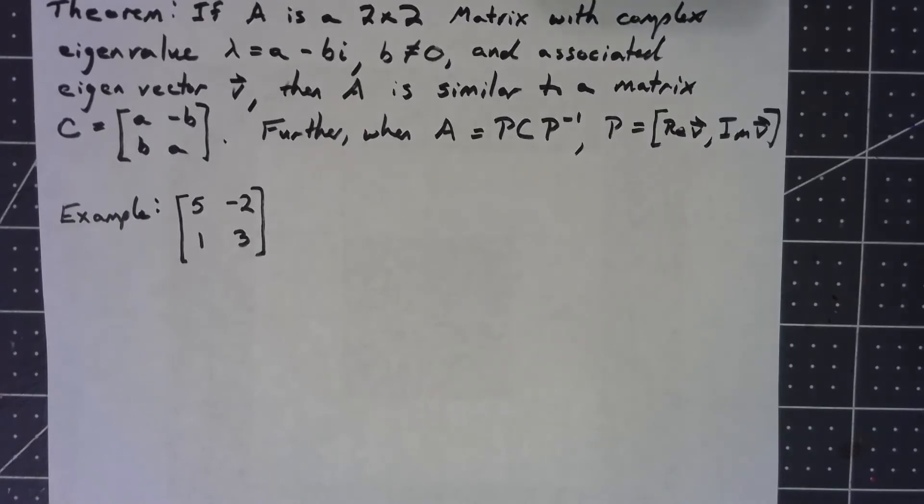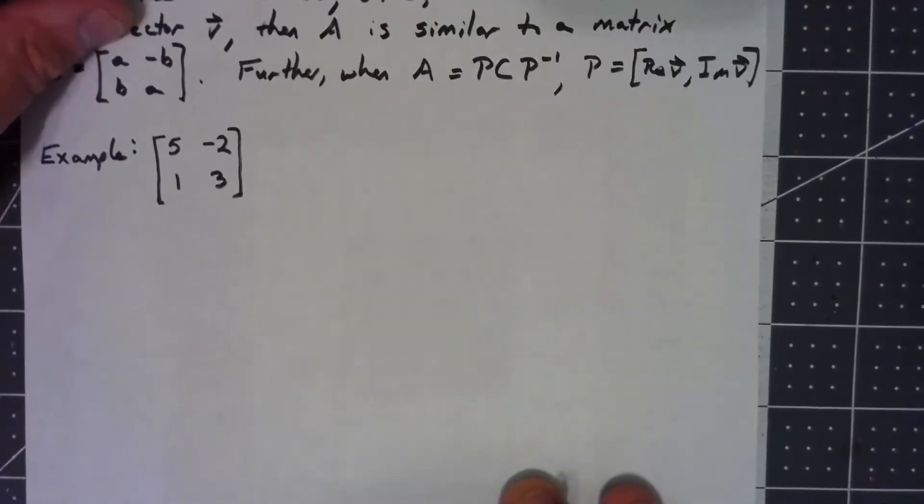I'm not going to prove this theorem. It's not amazingly difficult, but I don't know if the proof is all that enlightening. However, let's go through an example here. Let's take this matrix [5, -2; 1, 3] and let's go ahead and figure out what the eigenvalues and eigenvectors are.